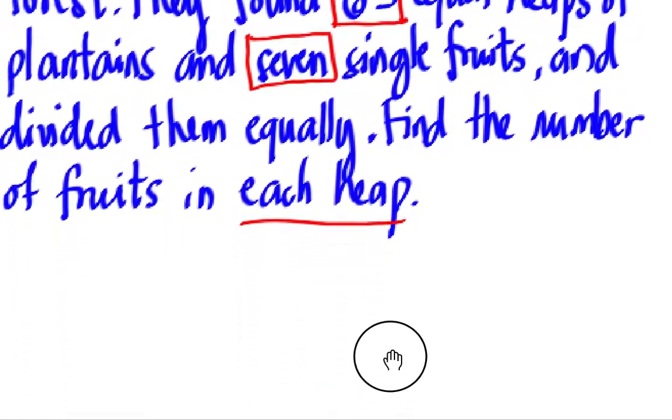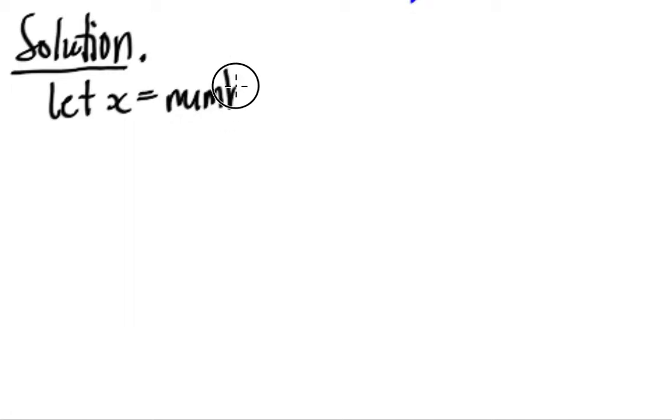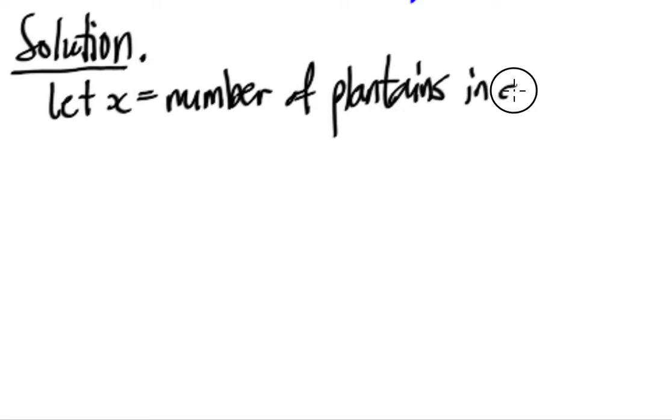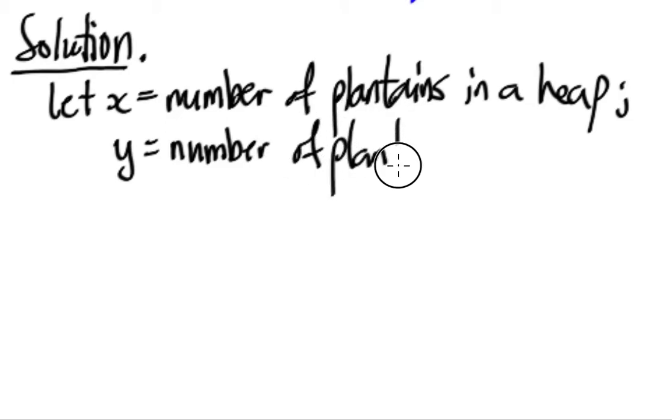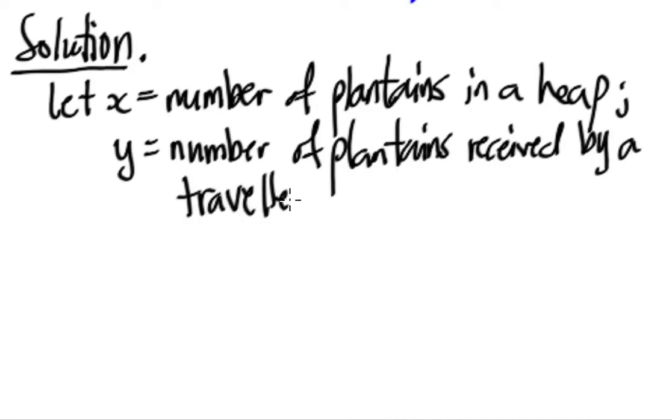So let's have a solution for this. Solution. We will first let, let X denote the number of plantains in a heap. And we will let Y. Similarly, we let Y as the number of plantains received by a traveler. So when you say by a traveler, that's one traveler.